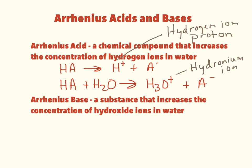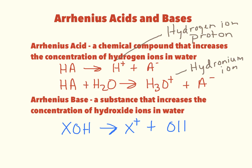According to Arrhenius, an acid increases the amount of hydrogen ions or hydronium ions in water. An Arrhenius base is a substance that increases the concentration of hydroxide ions in water. We can represent this as X-OH — X being any metal along with a hydroxide ion. Put that in water and it will dissociate, making the metal ion (the cation) and hydroxide ions (OH⁻). When you put these in water, you're increasing the amount of hydroxide ions, and that's what makes it a base according to Arrhenius.